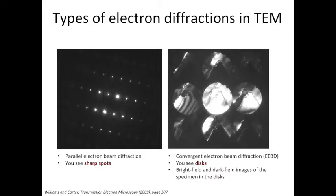I apologize for the typo here. CBED should be C-E-B-D, not E-E-B-D. One interesting thing to notice is that in CBED you see bright field image in the transmitted disc and you see dark field images in the diffracted discs.